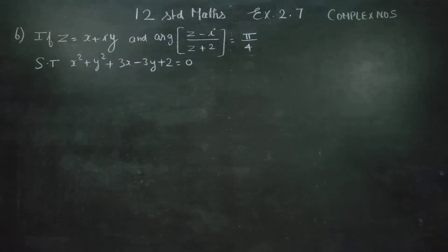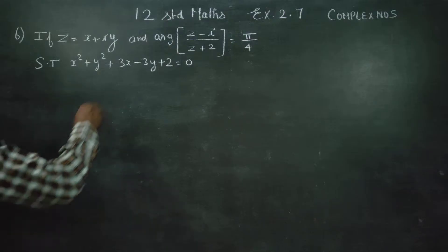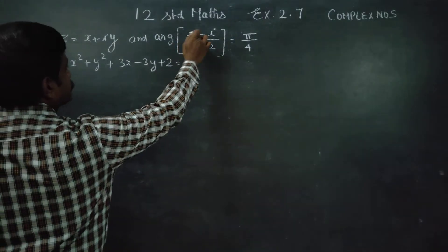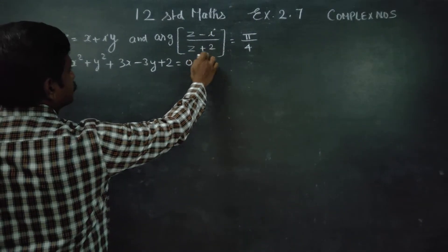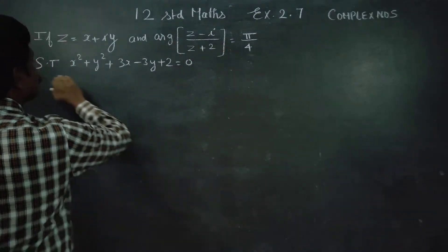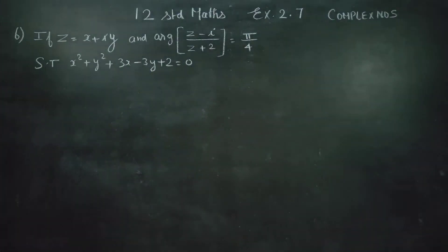Hello students, in exercise number 2.7, the condition is: argument of (z minus i) by (z plus 2) is equal to pi by 4. We have to prove this.